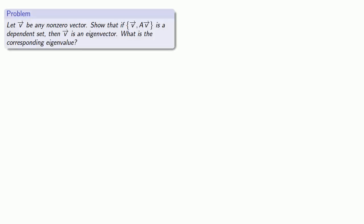The path to finding eigenvectors without determinants begins with the following. So suppose v is any non-zero vector. Let's show that if v, Av is a dependent set, then v is an eigenvector. And while we're at it, let's find the corresponding eigenvalue.